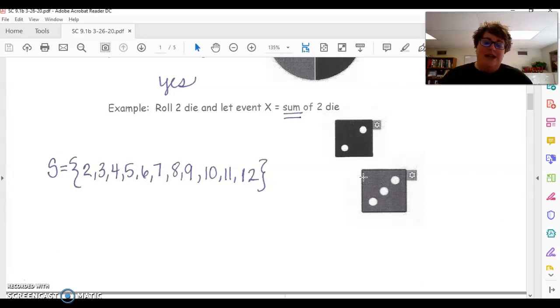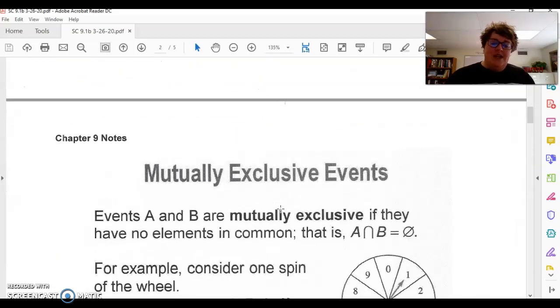So when you're rolling the sum of two dice, all of these options in your sample space are not equally likely. So you want to make sure as you're having this scenario that you decide is it equally likely or is it not. Now I am going to post a graph of the options that you get when you have the sum of two dice, because we will be using that later on.